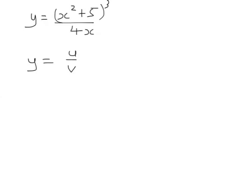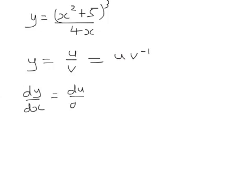Obviously I can write 1 over v as v to the minus 1. So if I differentiate, I can treat this as a product — two things multiplied together. So let's differentiate u and leave v to the minus 1 alone. And then let's leave u alone and differentiate v to the minus 1.